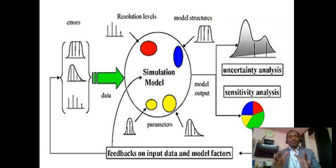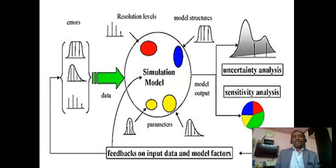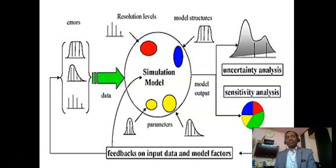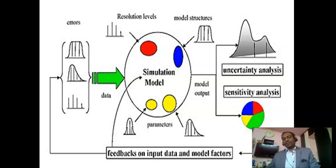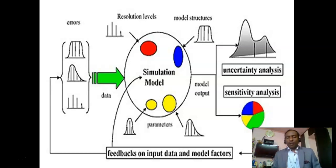This is a simple diagram where we can understand: we have different input errors, we are putting those errors into the data through a simulation model, and that can be corrected through certain parameters. Whatever data, results, and outcomes you are getting are always uncertain, so they need to be sensitized properly in order to get proper results.